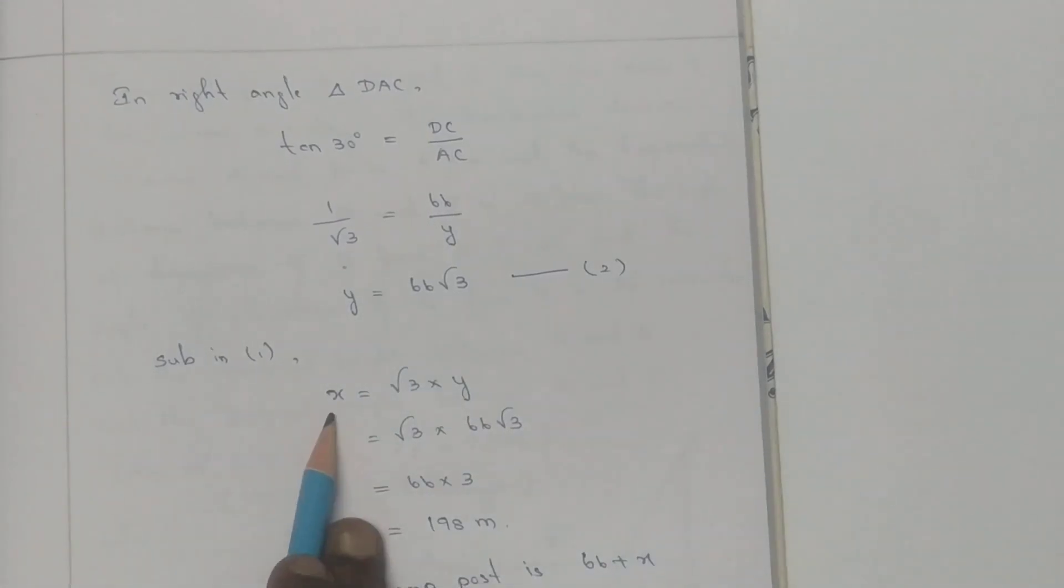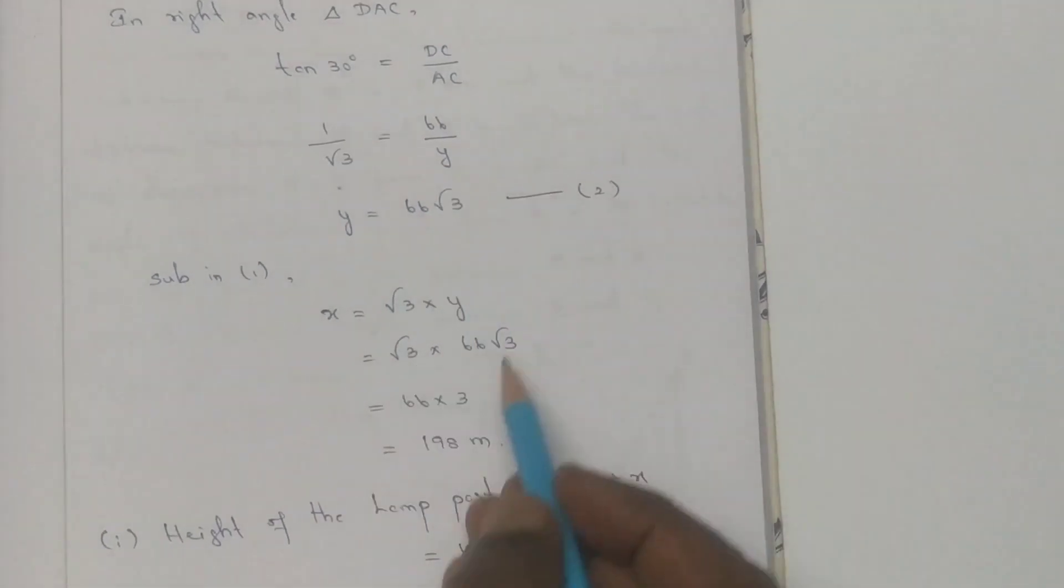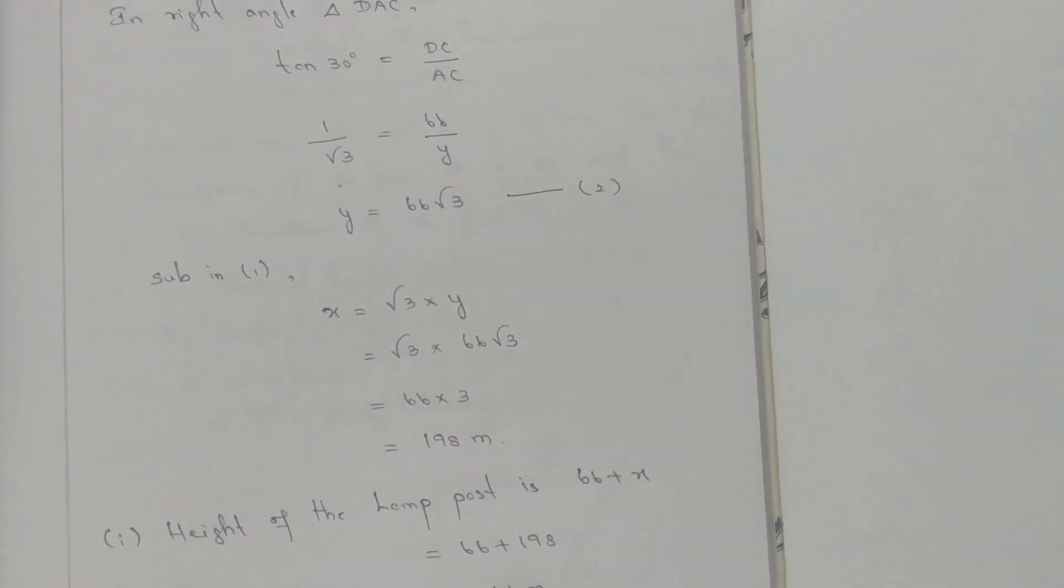Now substitute in equation 1: X equals root 3Y. Y equals 66 root 3. Root 3 times root 3 is 3. So 66 into 3 is 198 meters.